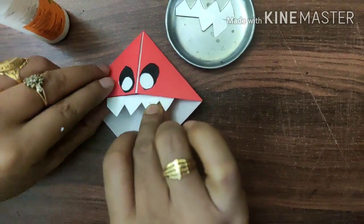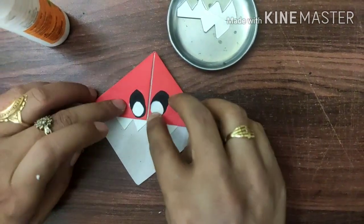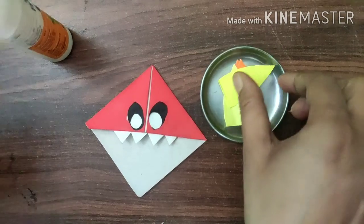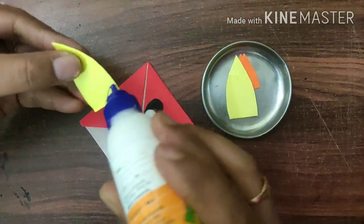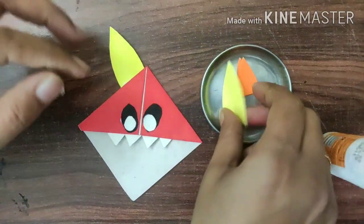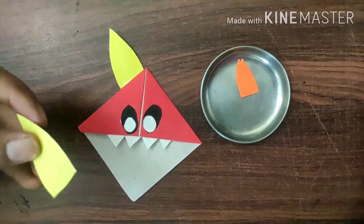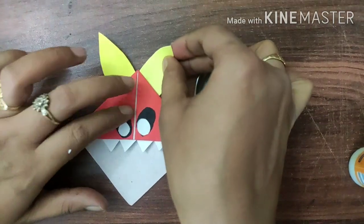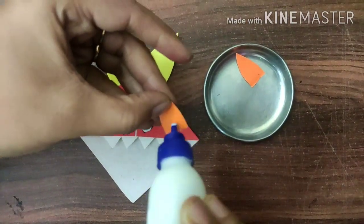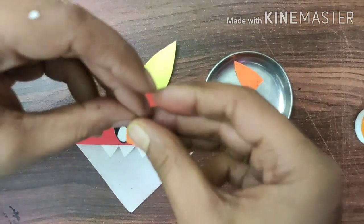Now take the cutouts for making ears. First of all, use the bigger part for bigger ears. It's your wish, you can use the color of your choice. I will go with the yellow one. To make it more beautiful, we can use the orange part.